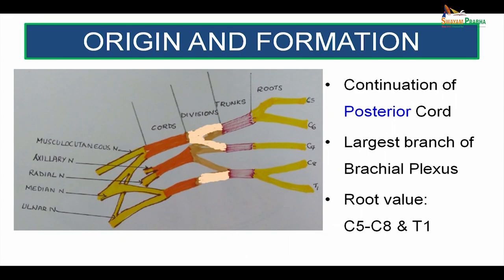Coming to talk about origin and formation, Radial Nerve is actually the continuation of the posterior cord and it is one of the largest branches of the Brachial Plexus. Before we proceed further, let us have a short introduction on Brachial Plexus.